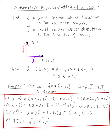And C times vector V — since V equals a1 times i plus b1 times j, multiplying by C distributes to give C times a1 times i plus C times b1 times j, denoted by the bracket Ca1 comma Cb1. The norm of V is the square root of a1 squared plus b1 squared.